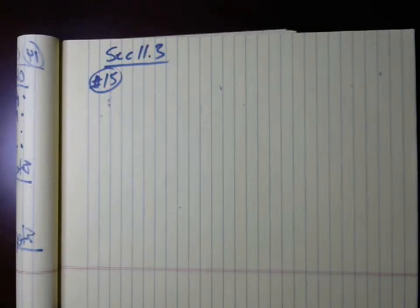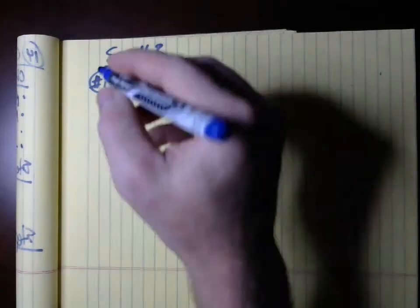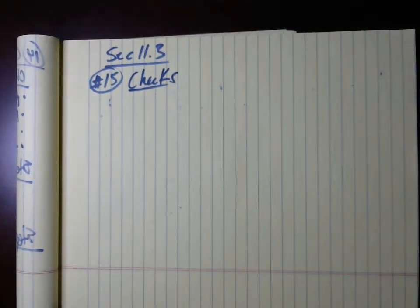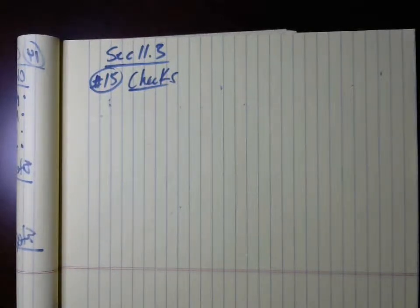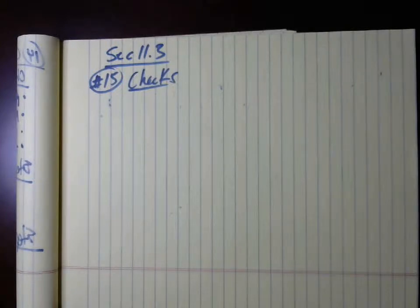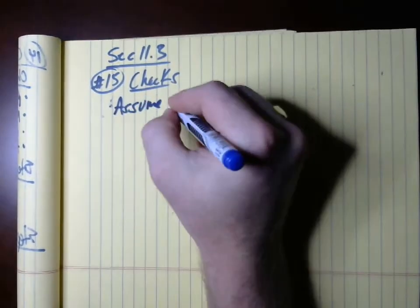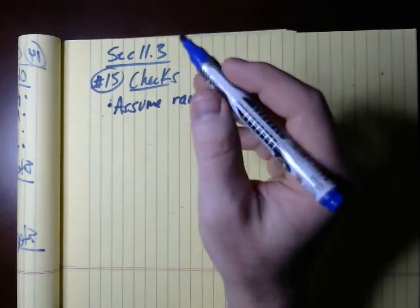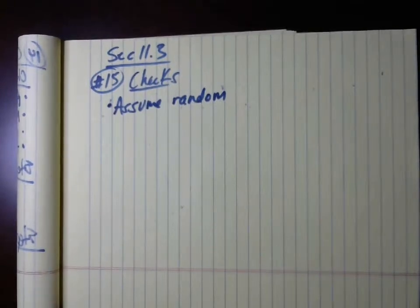Going directly to the checks: the first check is that the samples are obtained using simple random sampling through a randomized experiment. Reading into the problem, it doesn't say how these rooms were picked, but we're going to assume random. When you do your project you'll know how random your sampling is. It's not mentioned in the wording here, so let's just assume it's random.